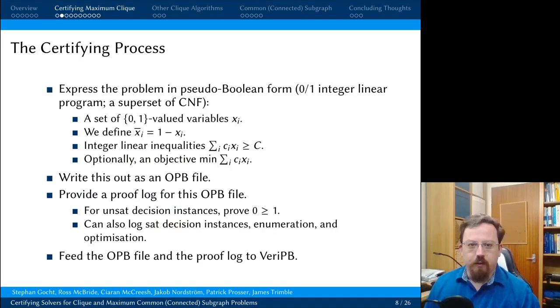What we're interested in is how I would go about convincing you that there is nothing bigger. So let's take a look at the certifying process. The first thing we need to do is decide how we're going to express the problem. And we're going to do this in pseudoboolean form. A pseudoboolean formula is a 0-1 integer linear program. It is conveniently a superset of CNF. We have a set of 0-1 valued variables, xi. And we define not xi to be 1-xi. We have integer linear inequalities as constraints. So the weighted linear sum over some variables is greater than or equal to some constant. And if we're dealing with an optimization problem, then we have an objective, which is to minimize the weighted linear sum of some of the variables.